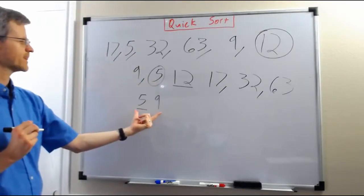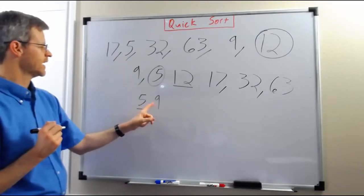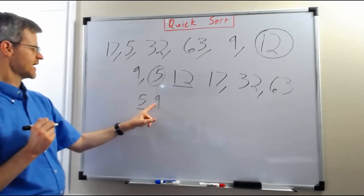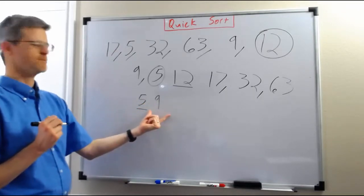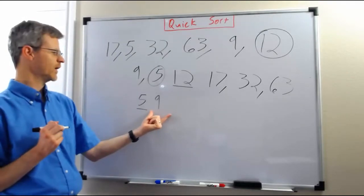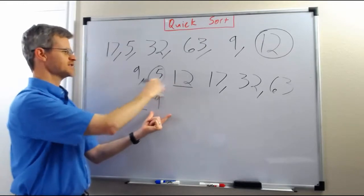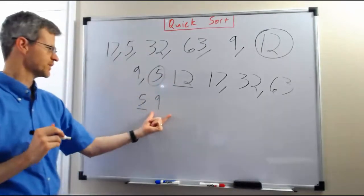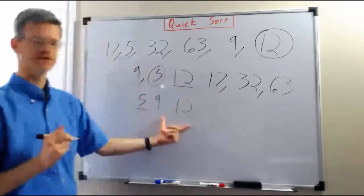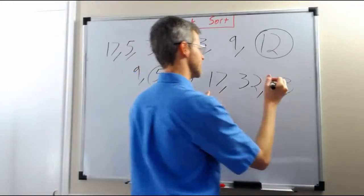So that list is now sorted, because we know that 9 is greater than 5 because we wrote it after the 5 — it was on that side of the pivot — and there's no way the 9 list can be out of order because it contains only one thing. We know it's greater than 5 and also less than 12, because we wrote it over here in the first place. Then we bring down the 12, and these three numbers are in order, and then we have this list over here.